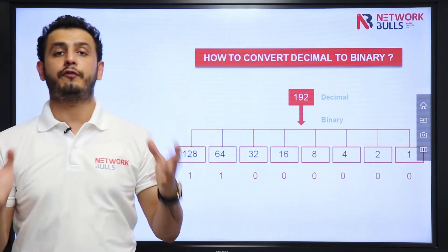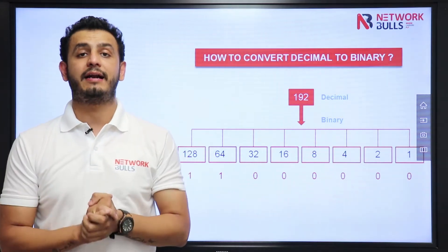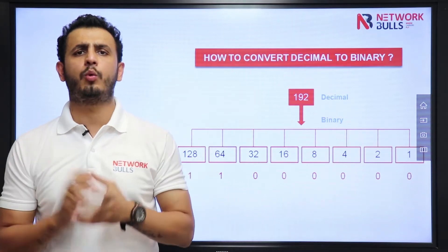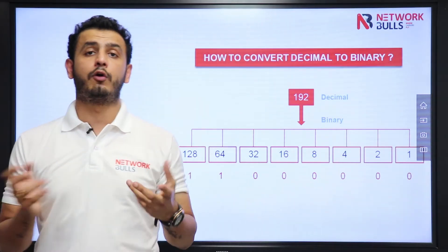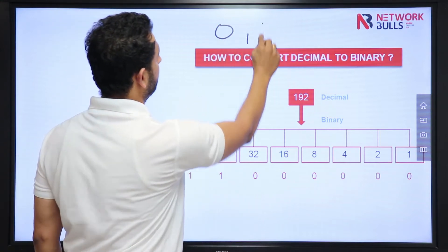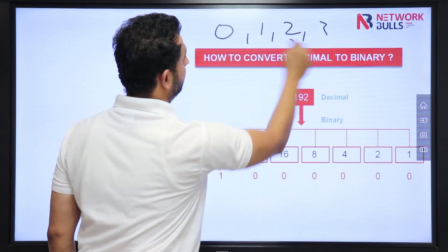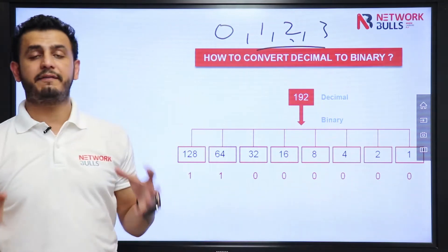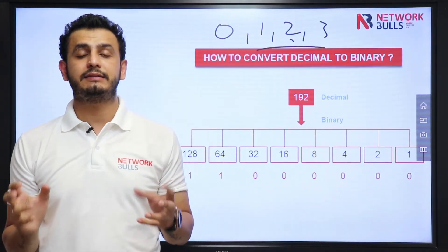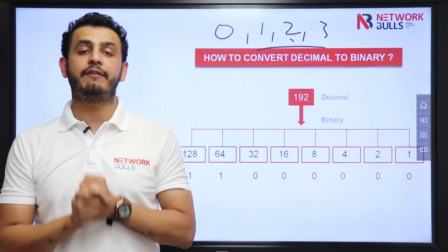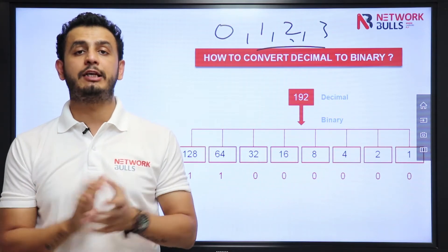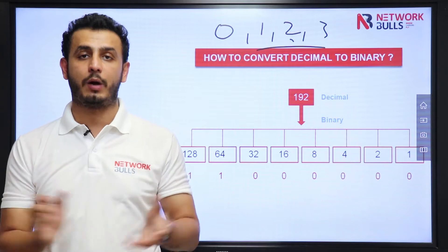First of all you want to know what are decimal numbers. As we write 0, 1, 2, 3, 4, 5, 6 — these all are decimal numbers. But when we talk about binary, binary numbers are represented in the form of bits, and a bit value is always 0 or 1.